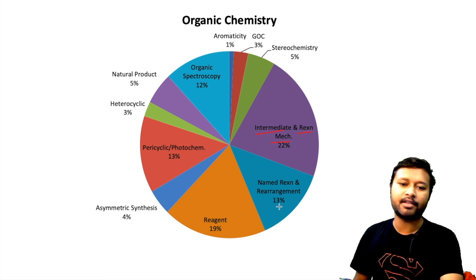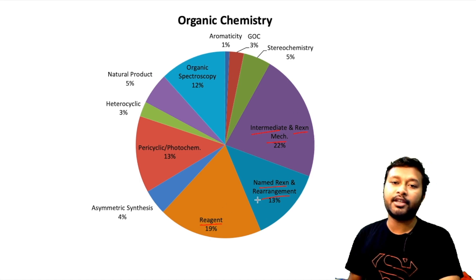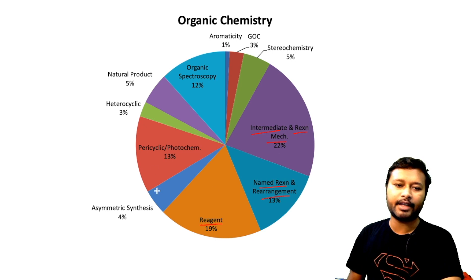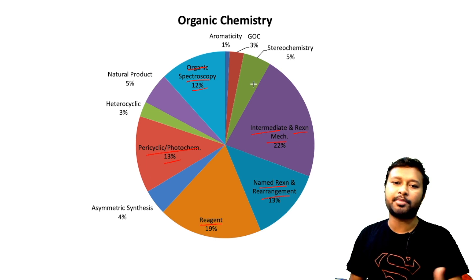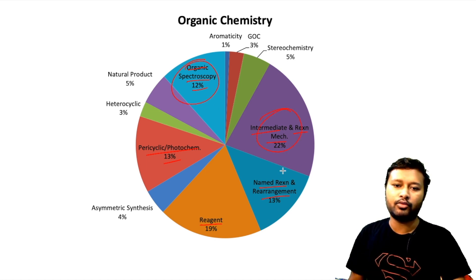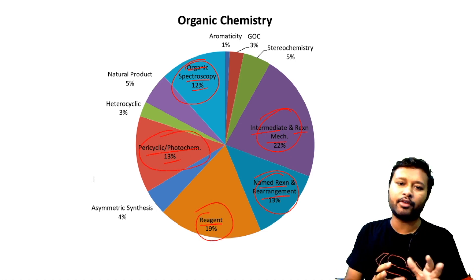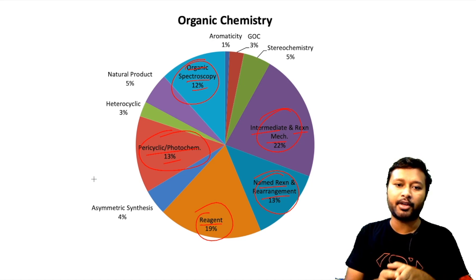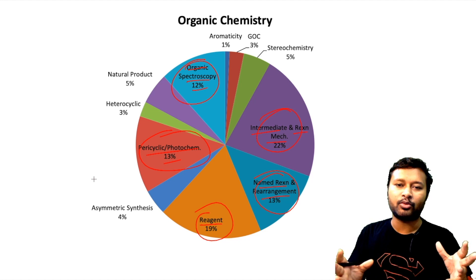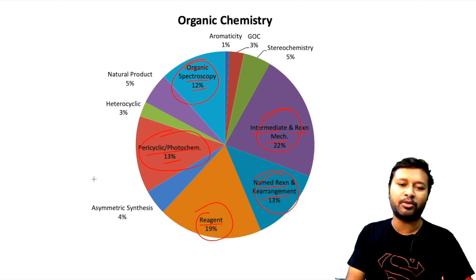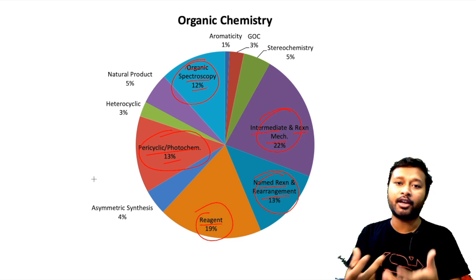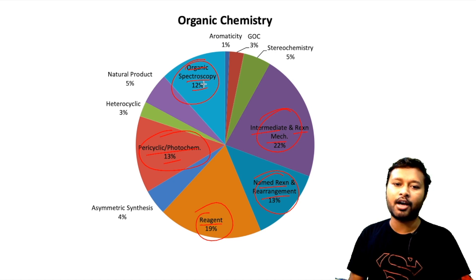For organic chemistry, the majority of the portion is covered by intermediate and reaction mechanism, followed by named reactions and rearrangements, and reagents. Adding pericyclic and photochemistry and organic spectroscopy, you can cover around 80% of the organic chemistry syllabus with just five topics. That's how you need to analyze and prepare — I've done this analysis so you don't have to do it yourself.